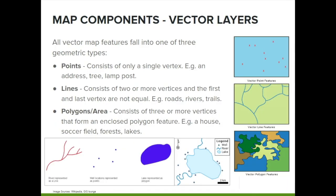Vector format layers are composed of paths and mathematically built to show an image. All vector map features fall into one of three geometric types: points, lines, and polygons. Points, also called nodes, represent features with an XY coordinate — that is, a latitude and longitude — such as trees, fence posts, and addresses. Lines, also called ways, are made up of linearly connected points.